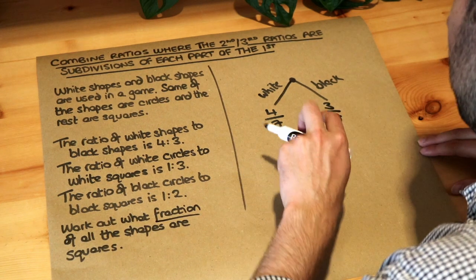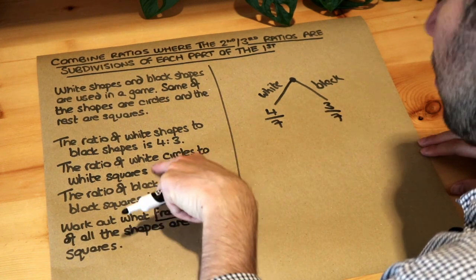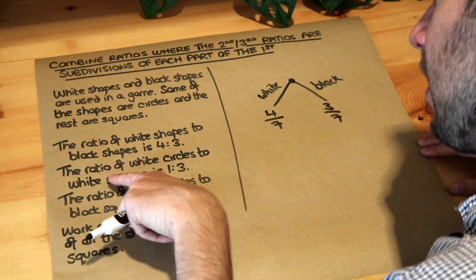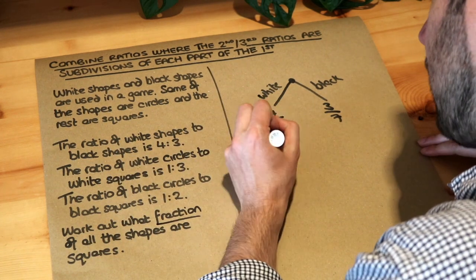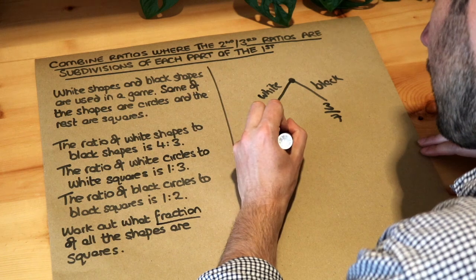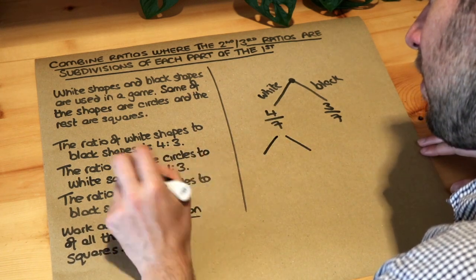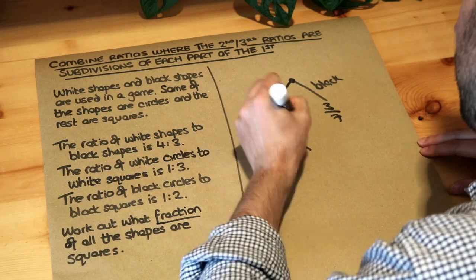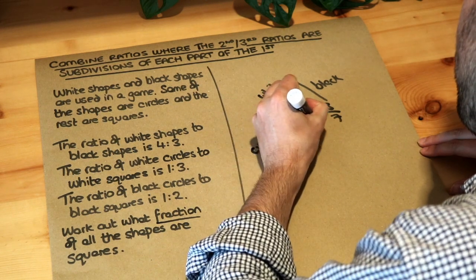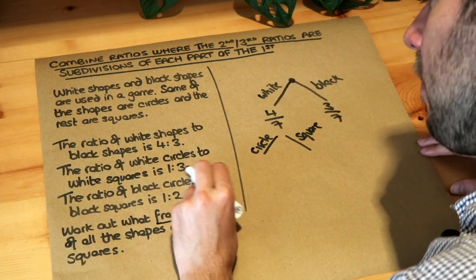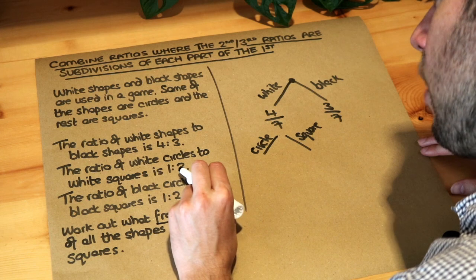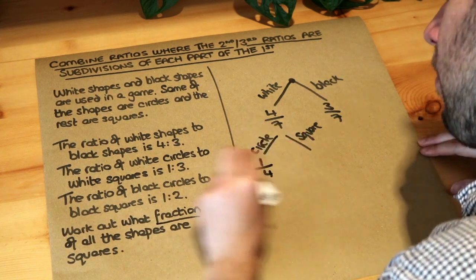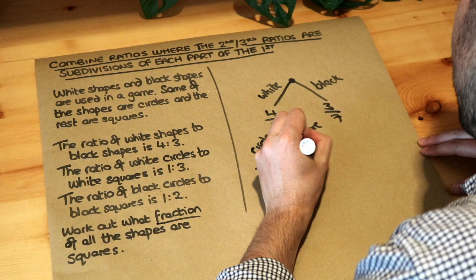Now let's use the tree to represent the subdivisions of the white shapes into circles and squares. Of those white shapes, they're split into circles and squares. The ratio is one to three, so one of the four parts is white circles — that's one-quarter — and three of the four parts are white squares — that's three-quarters. That's not saying a quarter of all the shapes are circles; it's saying a quarter of the white shapes are circles.